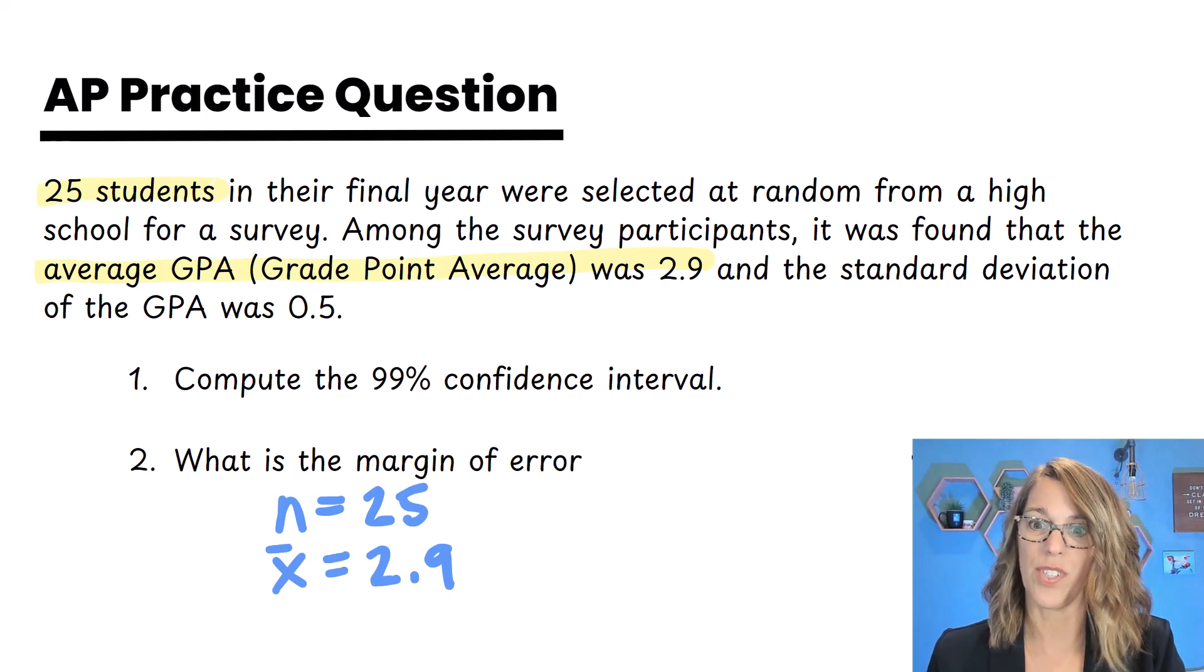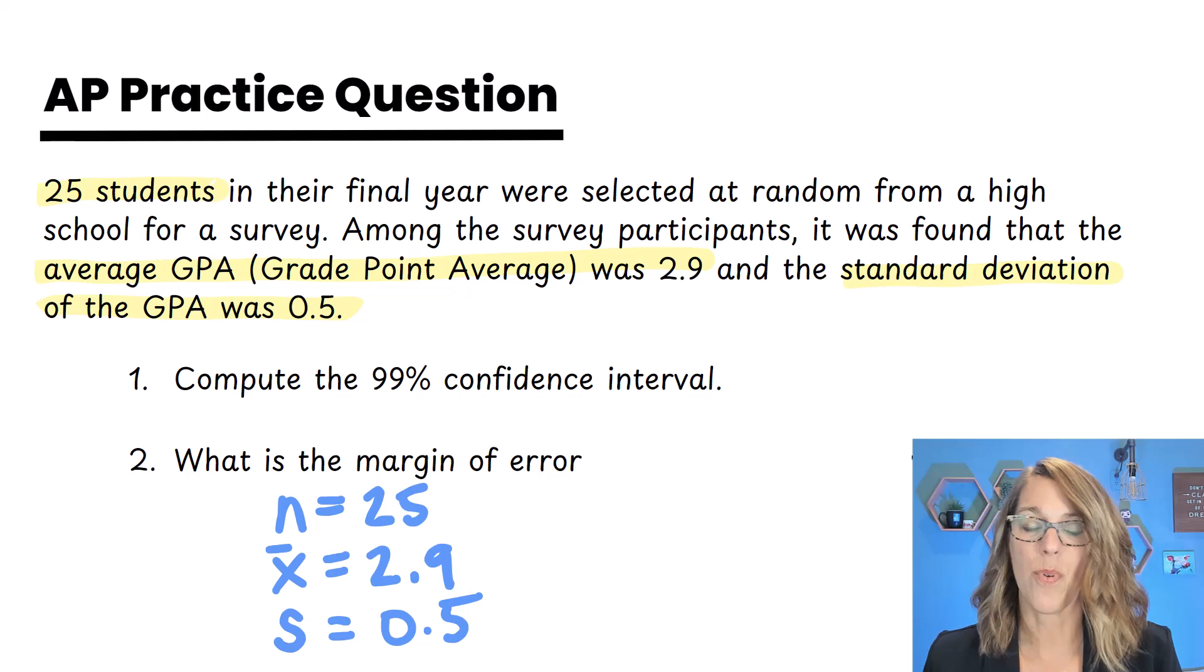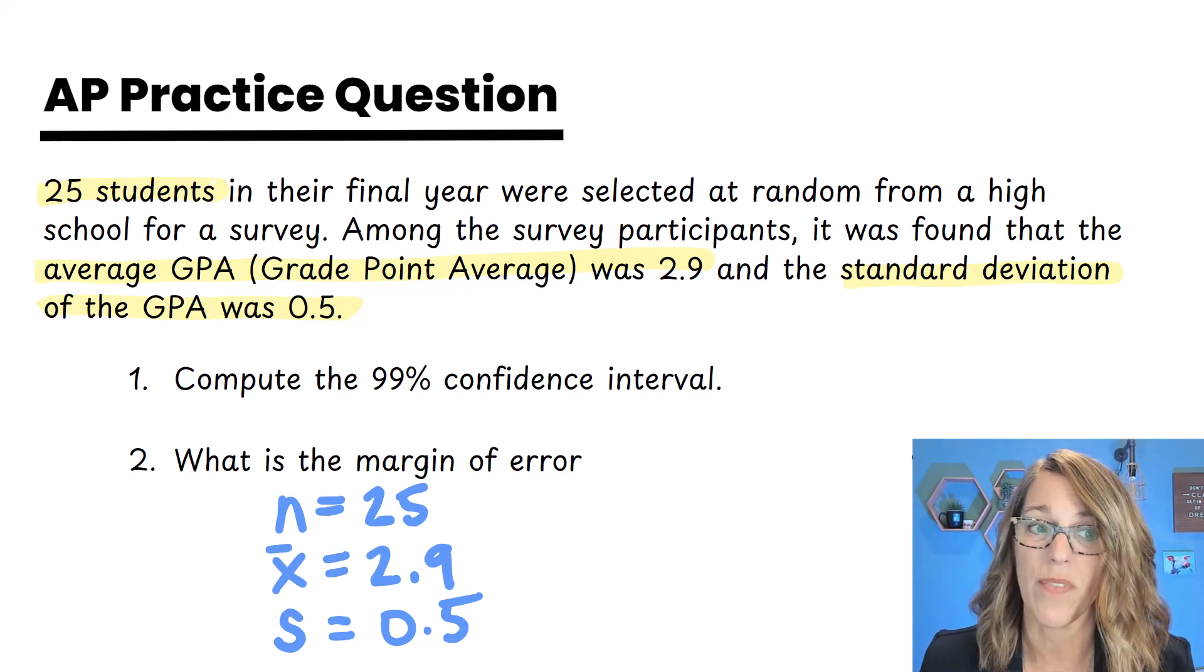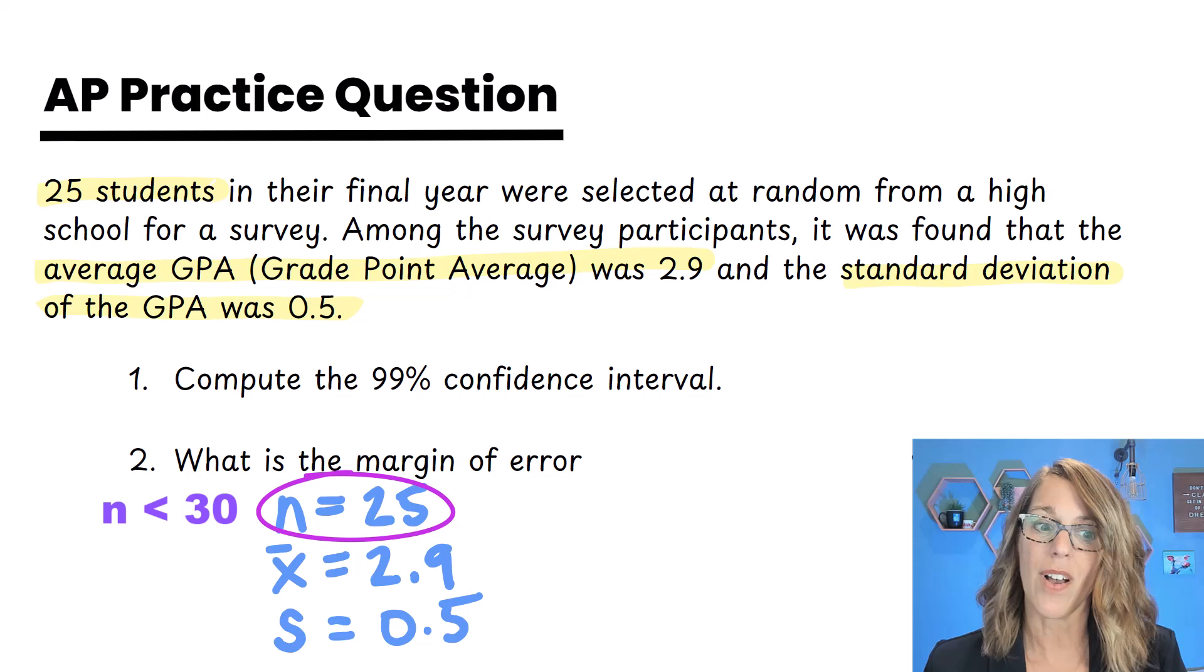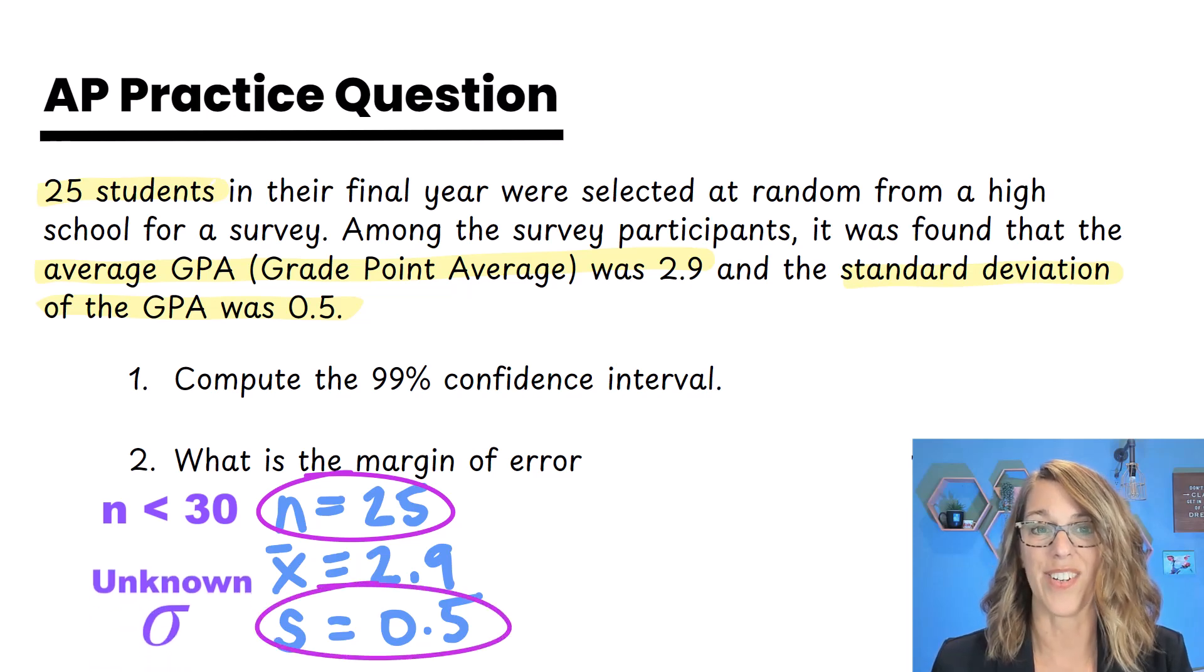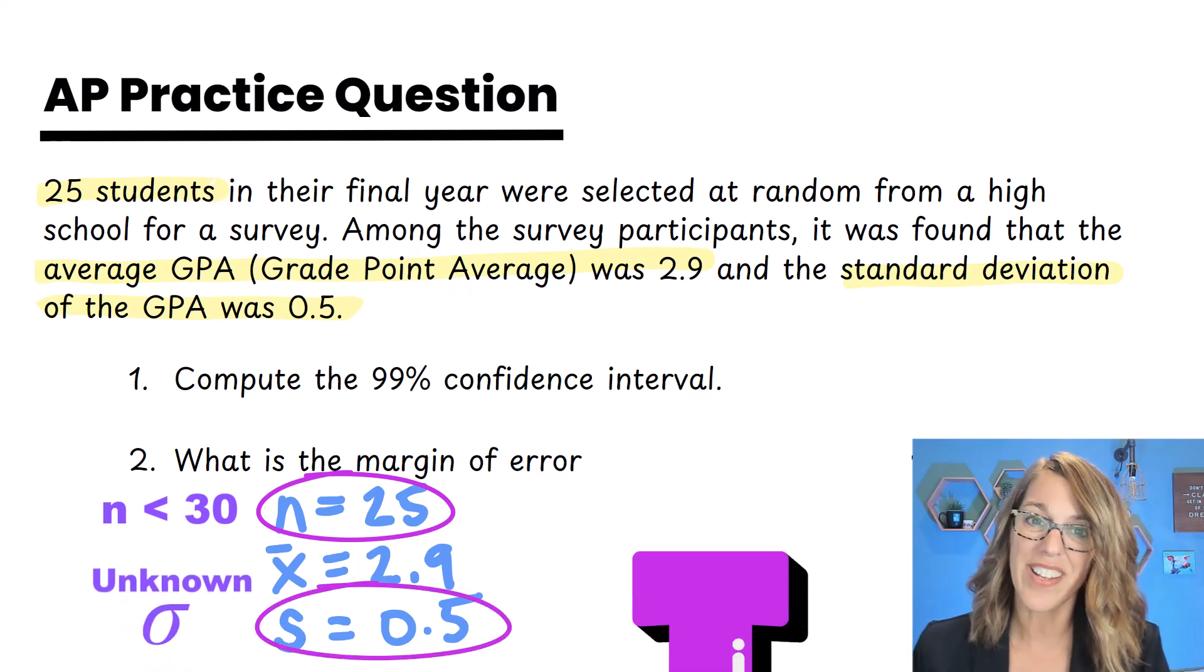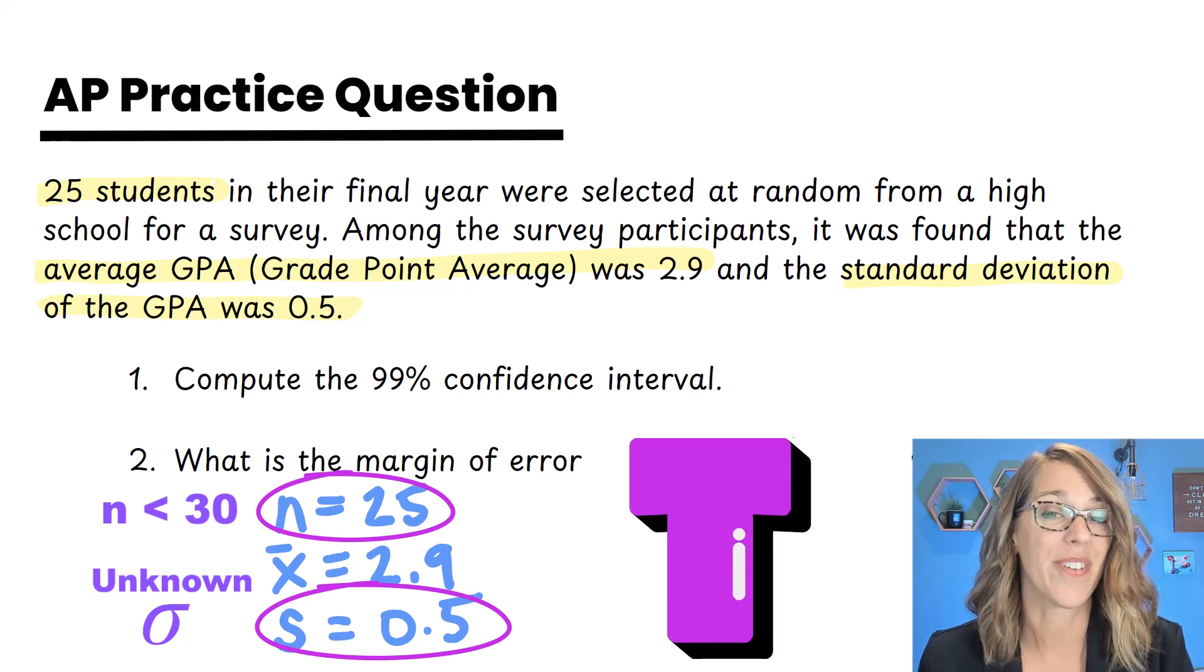Which means that our sample standard deviation is 0.5. So not only do we have a small sample size, less than 30, but we also have a sample standard deviation. We definitely want the T interval for this one.